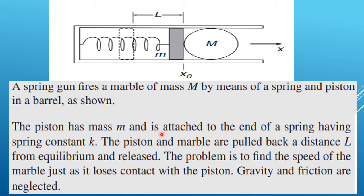A spring gun fires a marble of mass M by means of a spring and piston in a barrel. The piston has mass M and it is attached to the end of a spring having spring constant K. The piston and marble are pulled back to a distance L from the equilibrium in the negative x direction and released. The problem is to find the speed of the marble just as it loses contact with the piston. Gravity and friction are neglected.